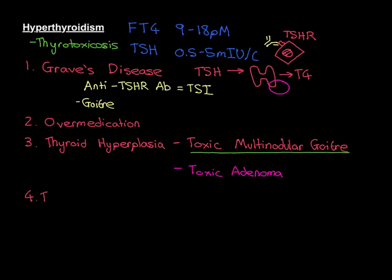The major form of thyroiditis to know about — and the one we mentioned in the previous video — is Hashimoto's thyroiditis. There are other forms, but they're very rare, so we'll stick to Hashimoto's. We said in the previous video that Hashimoto's thyroiditis is an autoimmune attack on the thyroid gland that destroys thyroid tissue and leads to hypothyroidism. So why am I now talking about it in a video on hyperthyroidism?